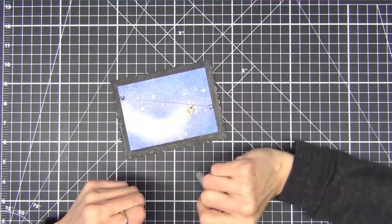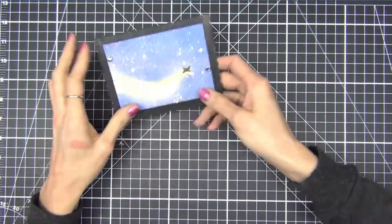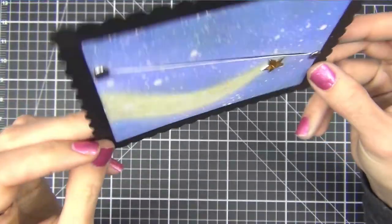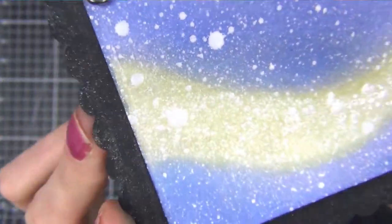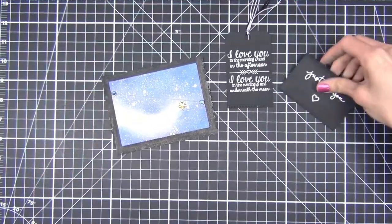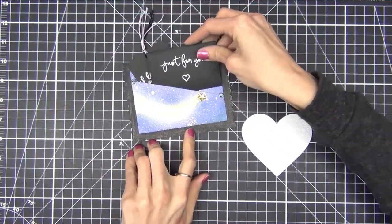For the last step before I stuff the pocket I add a little star gem with some strong liquid adhesive. I set an acrylic block on it to help it stay in place as it dries. You can kind of see some of the texture the resist spray adds. It's really cool because it's bumpy and I think that this will be great for mixed media projects and I'm looking forward to playing around with it more.